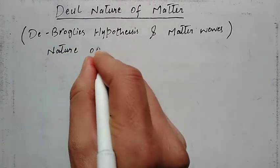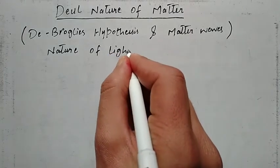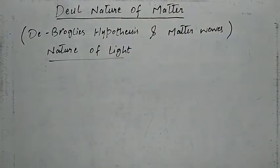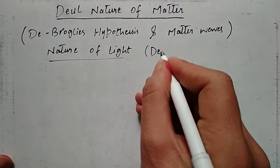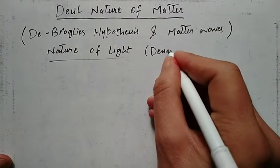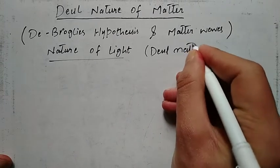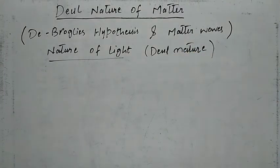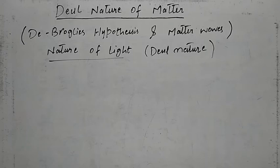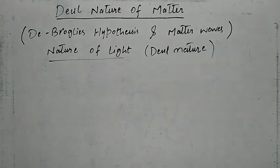Nature of light: as we know, light has got dual nature. That means light consists of both waves as well as material particles — it has both wave nature and particle nature. So we can say light, or any radiation, has got dual nature.